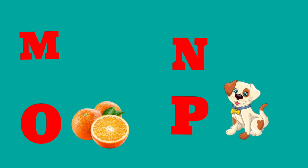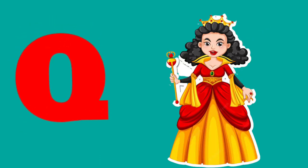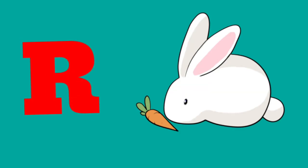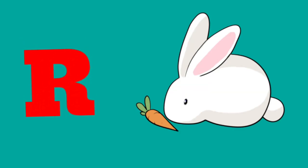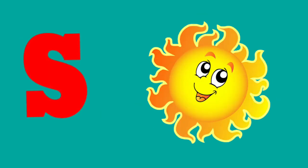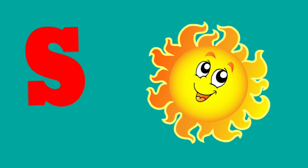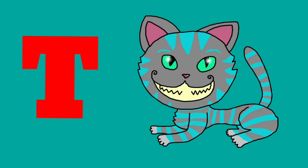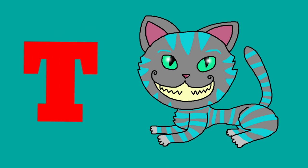Q is for queen, q-q-queen. R is for rabbit, r-r-rabbit. S is for sun, s-s-sun. T is for toad, t-t-toad.